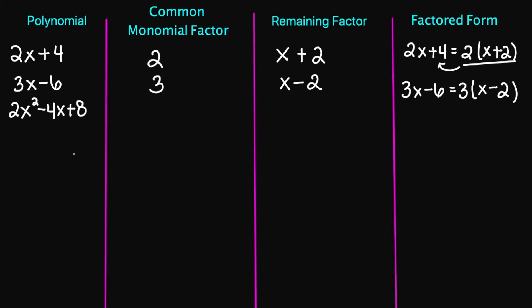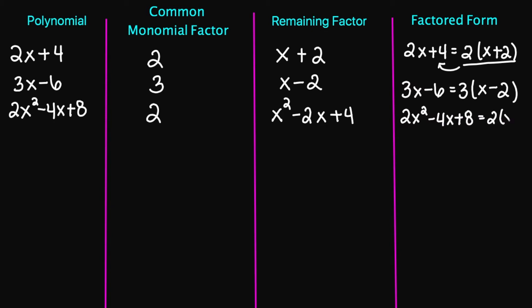So let's try 2x squared minus 4x plus 8. The common factor we have here is going to be the number 2. If I factor out a 2, I'll be left with x squared minus 2x plus 4. So your factored form is going to be 2x squared minus 4x plus 8, which equals 2 times x squared minus 2x plus 4.